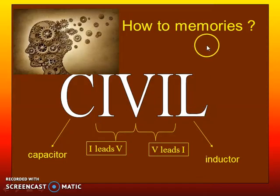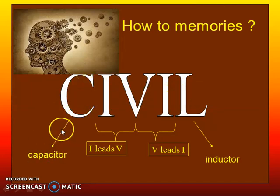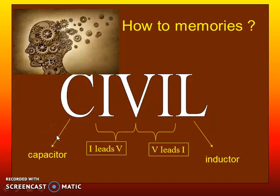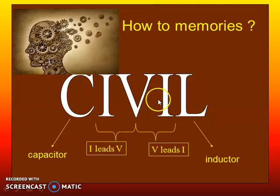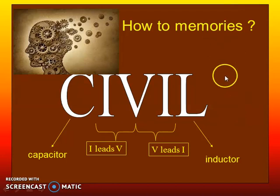How to memorize this concept? We can memorize using the word CIVIL — C-I-V-I-L. C represents capacitor followed by letters I and V, meaning I leads V for a capacitor in an AC circuit. Then followed by V-I-L, where L represents inductor, so V leads I. V comes before I in the letters, meaning V leads I. This is the easiest way to memorize the phase relationship between current and voltage in the alternate current circuit.